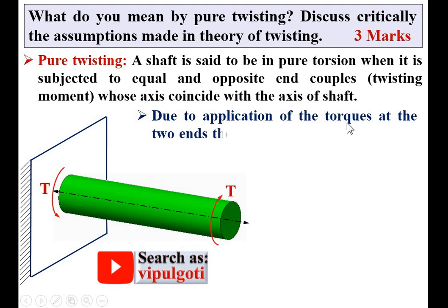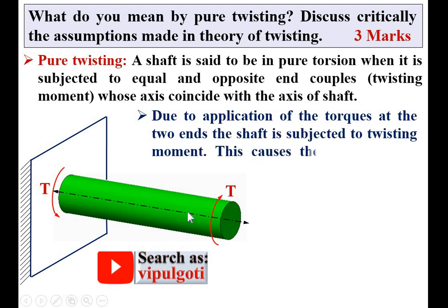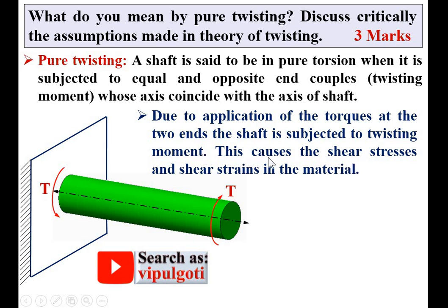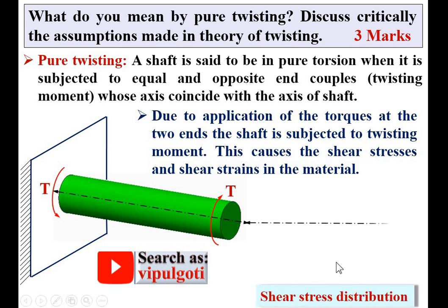Due to the application of torque at the two ends, the shaft is subjected to twisting moment, and this causes shear stresses and shear strain in the material. If I want to draw the shear stress distribution diagram, it looks like this — this is the shaft.